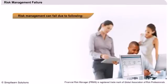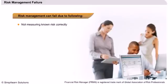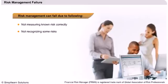Another reason risk management can fail in an organisation is the failure to measure risk correctly — that is to say, the company might not be able to quantify the risk properly. Another reason is that some risks might not be recognised. This can happen mainly due to ignorance and inexperience of the managers.